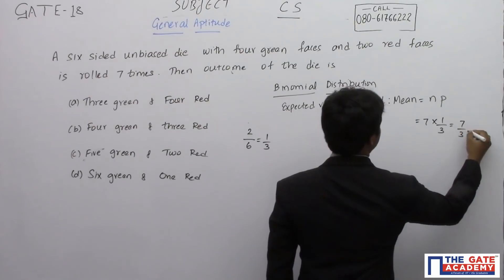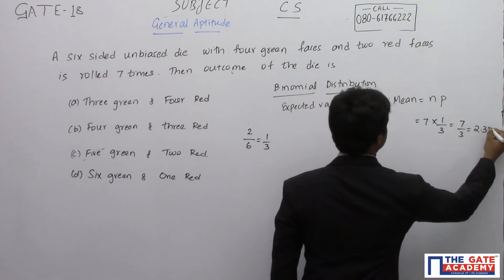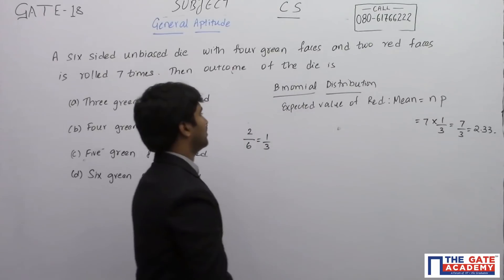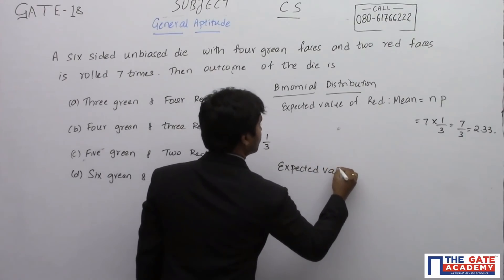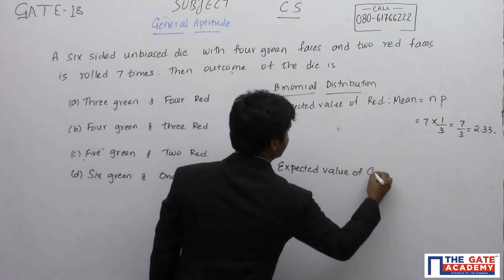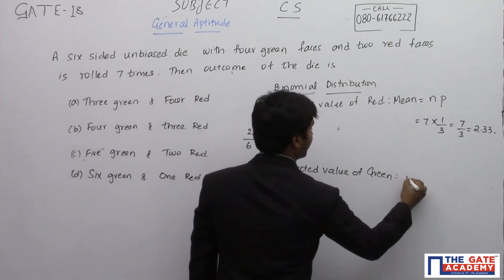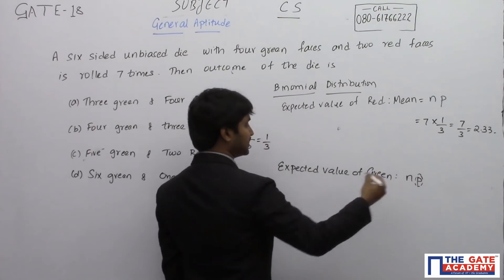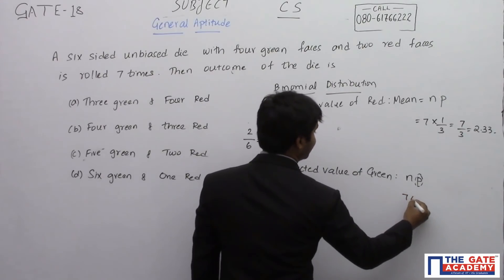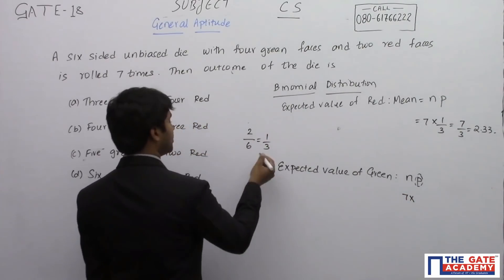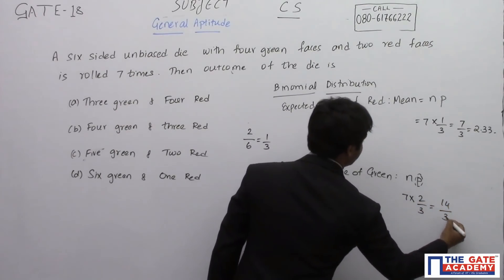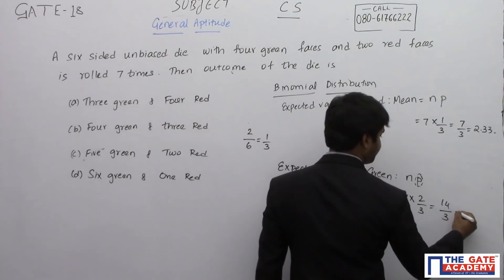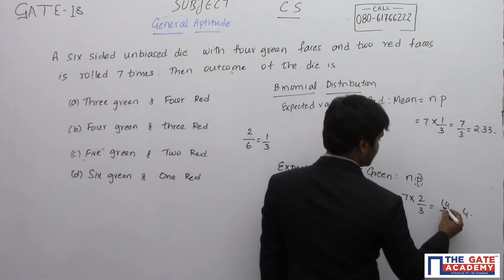So the expected value of red = 7 × (1/3) = 7/3 ≈ 2.33. The expected value of green = n × p, where p for green = 1 minus probability of red = 1 − (1/3) = 2/3. So expected value of green = 7 × (2/3) = 14/3 ≈ 4.67.